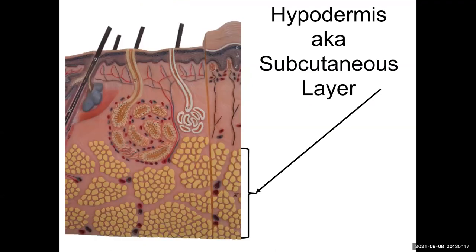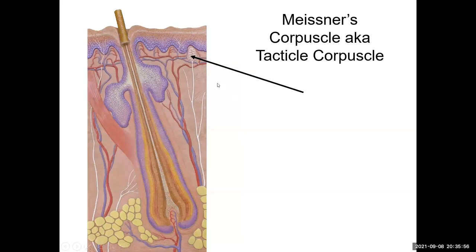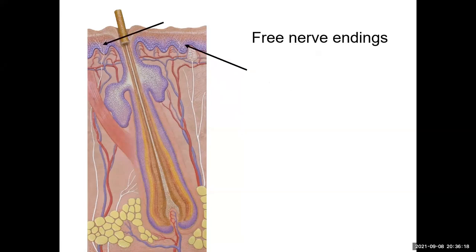Where all those blood vessels are concentrated in the papillary layer — that's called the papillary plexus. Below the dermis is the hypodermis or subcutaneous layer, containing only two types of connective tissue: areolar and adipose. The adipose connective tissue appears as yellowish clumps of fat. Notice all those blood vessels you can see in and around that area.